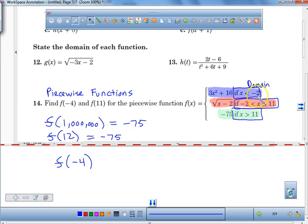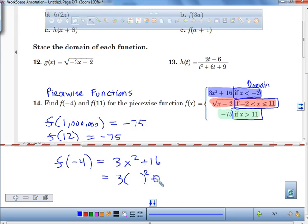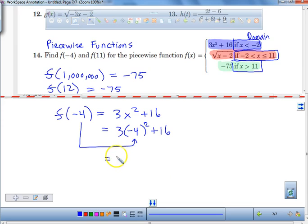So negative 4 falls into this category because negative 4 is less than negative 2. So we have to use this equation. So instead of putting 3x squared plus 16, what am I going to plug in to replace the value of x? Going to plug in negative 4. Why am I using this function right here? Because my domain was less than a negative 2. So now we just evaluate. Negative 4 times negative 4 is 16. 3 times 16 is 48. You add those together and you get the value of 64. And that's your first answer for number 14. So if you have a piecewise function, you have to figure out which one of these am I going to use.